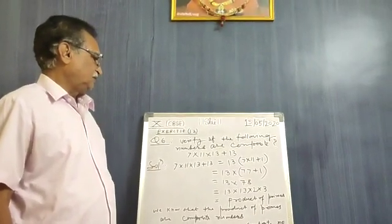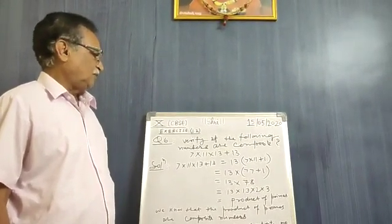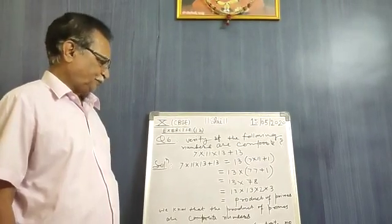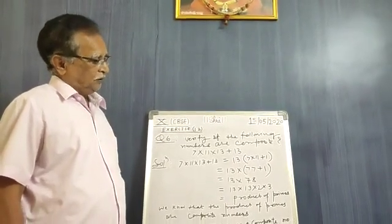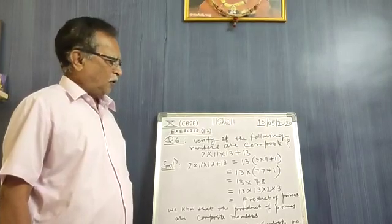Now come to question number 6. Verify if the following numbers are composite numbers. To decide whether the number is composite or not,